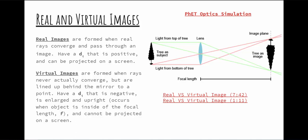Here's a better definition for real and virtual images. Real images are physically there — they can be projected — because the light rays converge. Virtual images: the light rays just appear to have been there, and they cannot be projected.